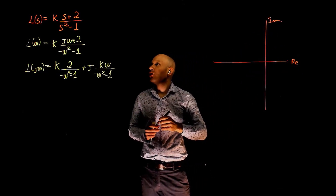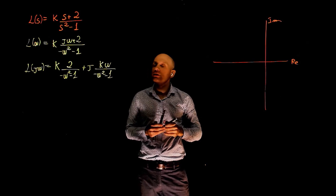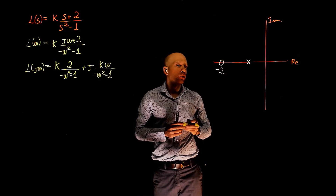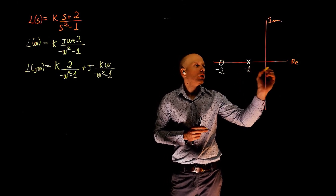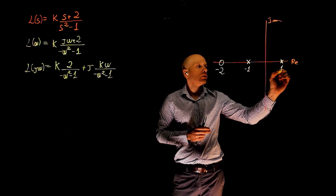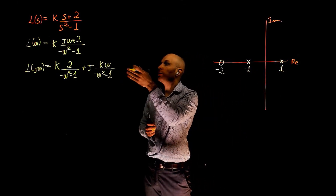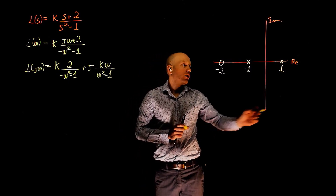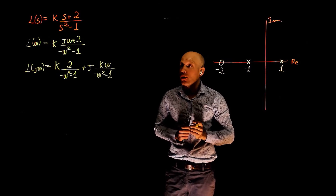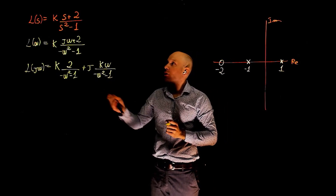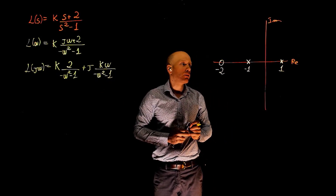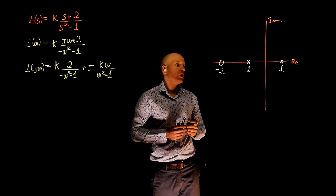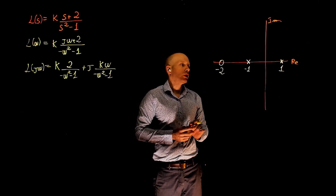I'll place all poles and zeros. We have a zero at −2, and we have two poles: one at −1 and one at +1, since s²−1=0 gives s=±1. We see here we have an unstable pole, so this function in an open-loop control scheme would be unstable. Let's see how it behaves in the closed-loop control scheme based on the Nyquist plot.